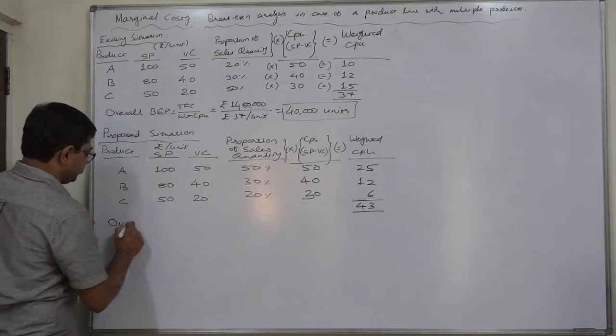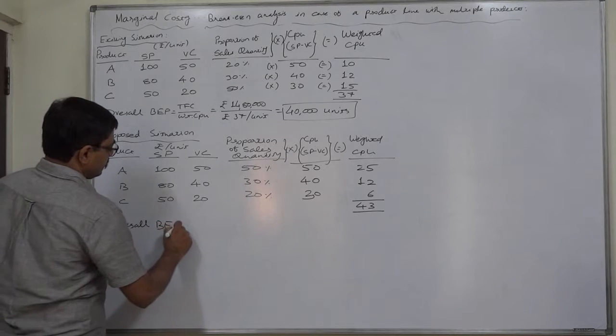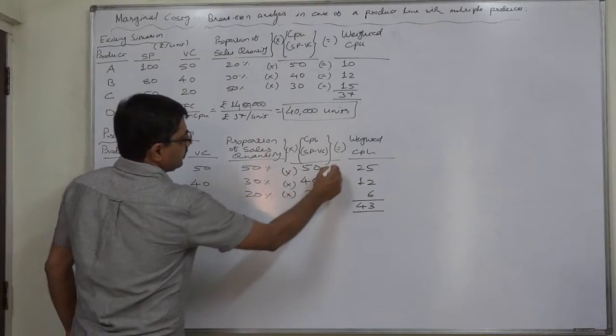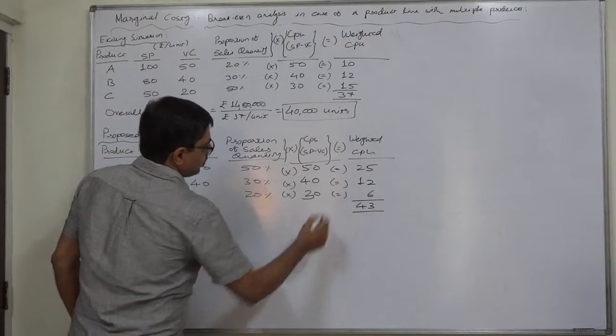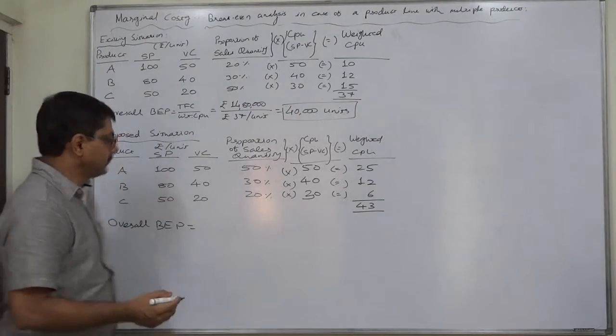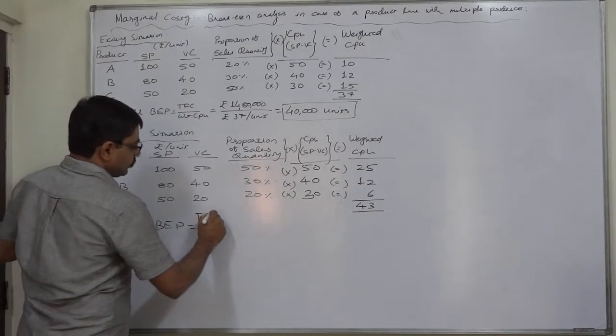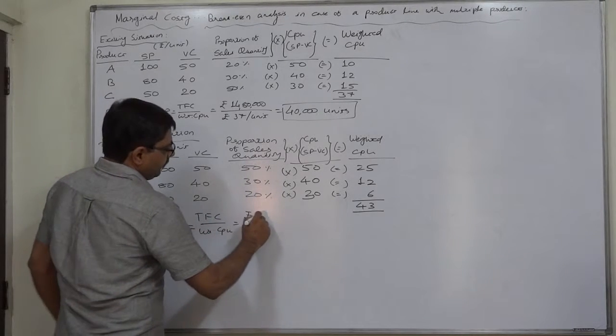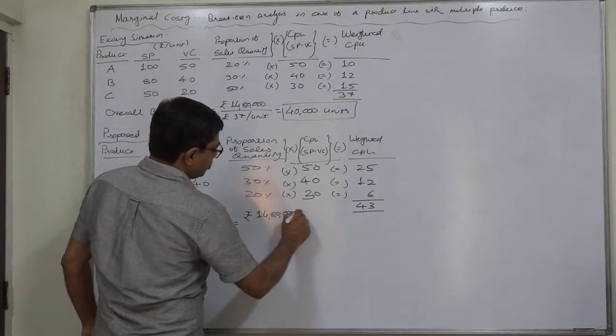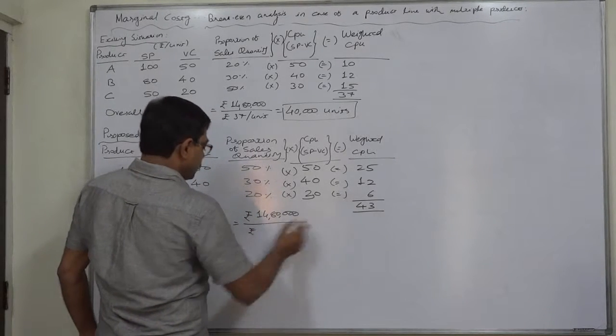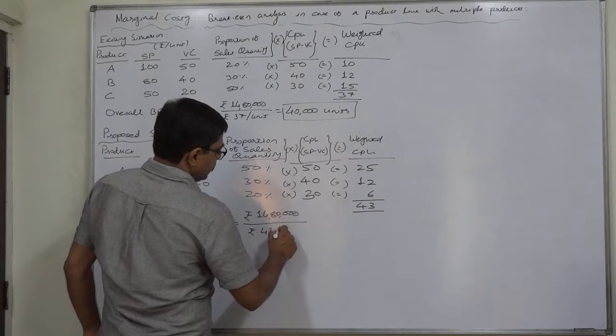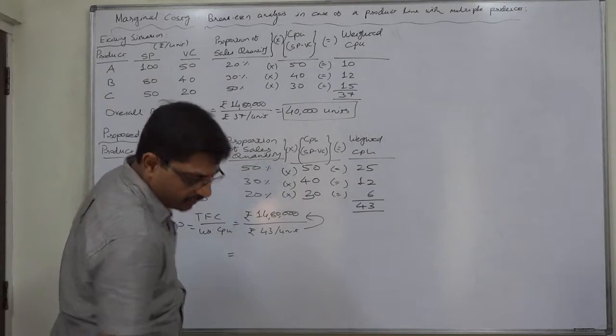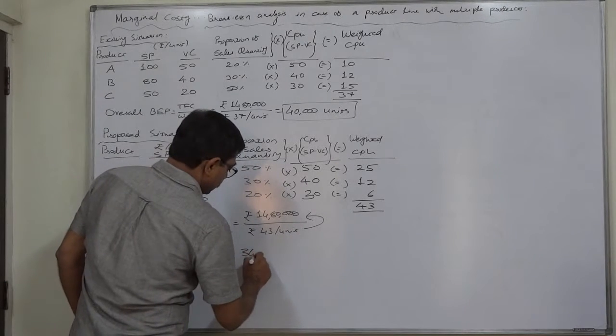Let us calculate it. I advise you to use these types of signs everywhere. Overall BEP is total fixed cost upon weighted contribution per unit. Total fixed cost unchanged: Rs. 14,80,000 divided by the changed contribution per unit Rs. 43. So it comes to 34,490 units approximately.